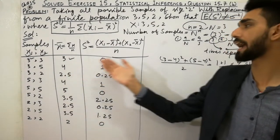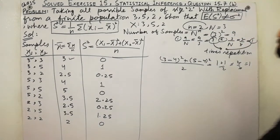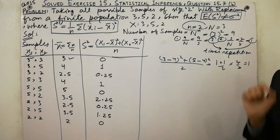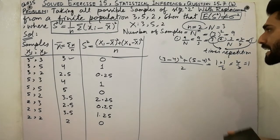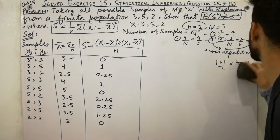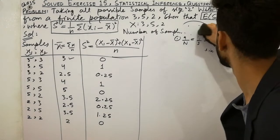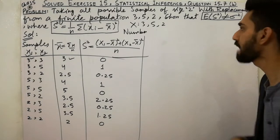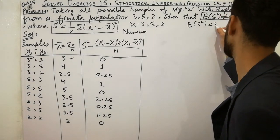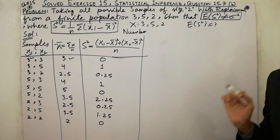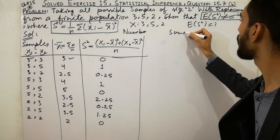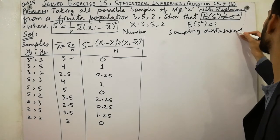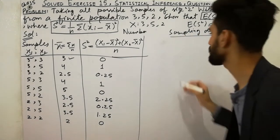Now the main part of the lecture: we have to show that E(S²) does not equal σ². First, calculate E(S²) by making the sampling distribution of S². List the distinct S² values in a table.